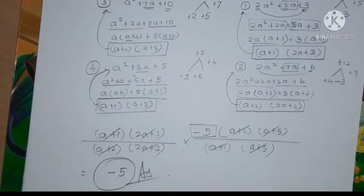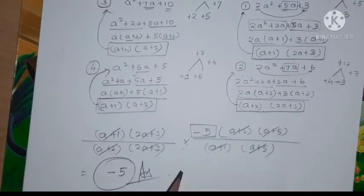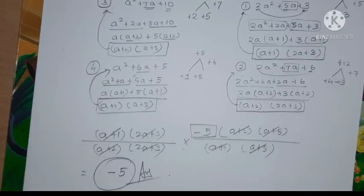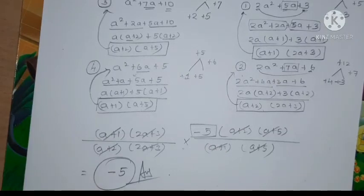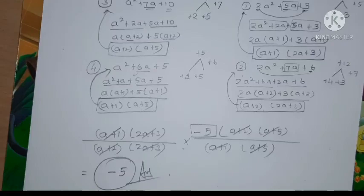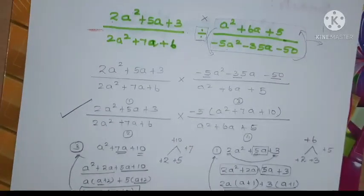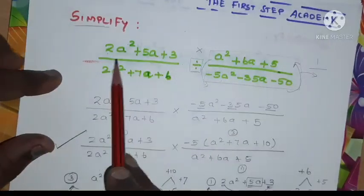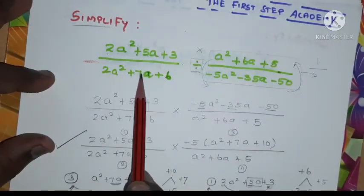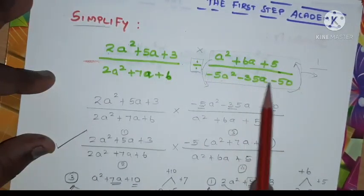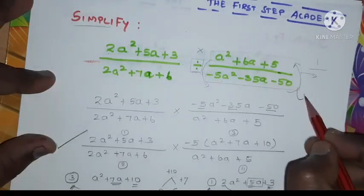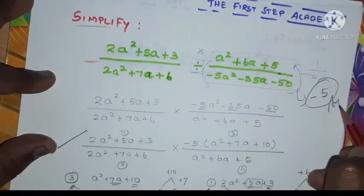Hope you understand how we solved this problem. The answer for this particular problem is minus 5. We factorized all the polynomials, substituted them in the respective places, and cancelled the possible values. Once again, the problem was: simplify 2a squared plus 5a plus 3 divided by 2a squared plus 7a plus 6, divided by a squared plus 6a plus 5 divided by minus 5a squared minus 35a minus 50. The answer is minus 5.